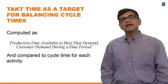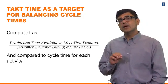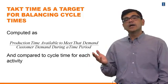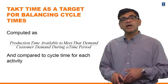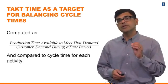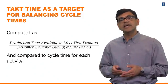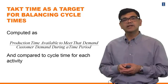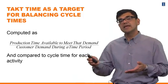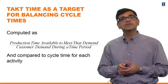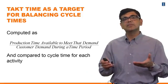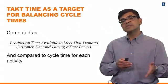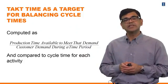One more metric to consider is takt time. Takt time is calculated based on customer demand rate — that is the rate at which you want each of your activities in the process to be performing. If you can balance each activity of a multi-activity process to the rate at which the customer is consuming the end product, you get a completely balanced process with good capacity utilization across all activities. Takt time is a good way of thinking about the ideal cycle time for each process.